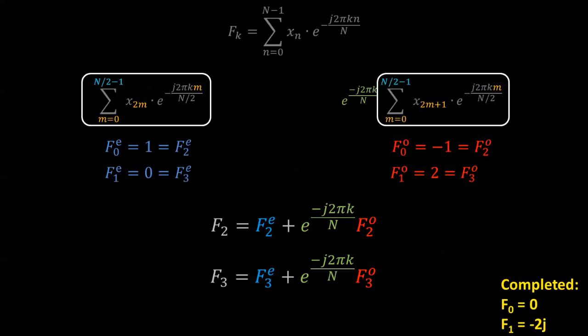As a result, f sub 2 is simply equal to the sum of the even and odd summations of f sub 0. Similarly, f sub 3 is simply equal to the sum of the even and odd summations of f sub 1. The extra exponential term in green is going to change depending on what k value we have, so that's the only distinguishing factor between the first half and the second half of the frequency bins.